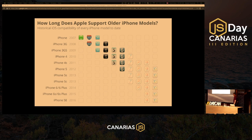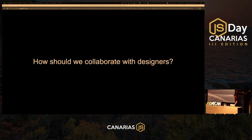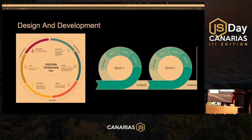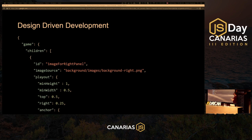So how should we collaborate with designers? Every site will tell you: agile, sprints, spiraling — basically working together. We wanted to work together and we didn't want to fiddle with pixels, because that was tiring for us. So we came up with a solution: we give a JSON file to the designers.